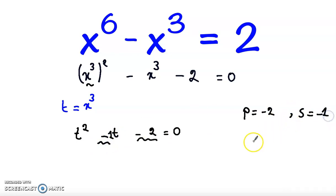These two numbers are minus 2 and plus 1. If you multiply these two numbers we get minus 2, and if you add them we get minus 1. Now the quadratic equation becomes t minus 2 and t plus 1 equal to 0.